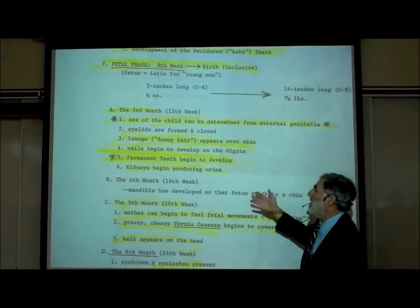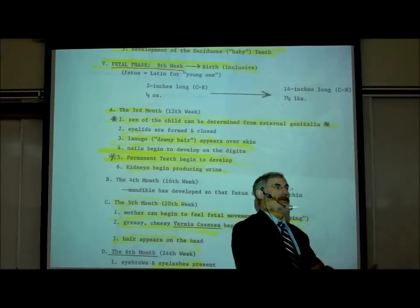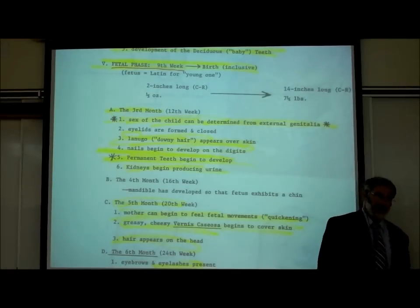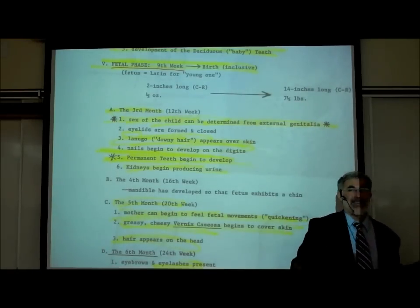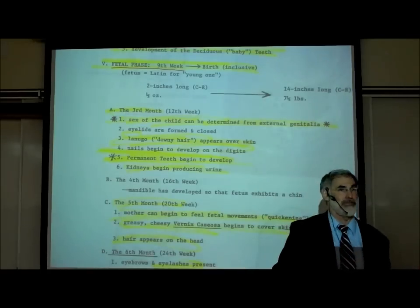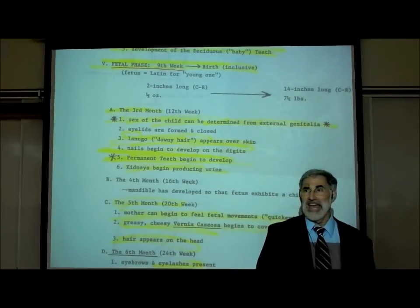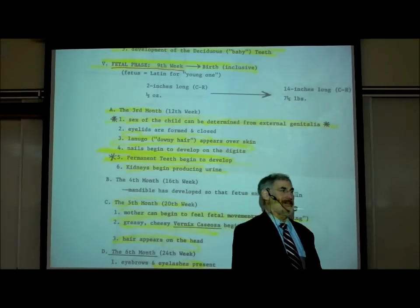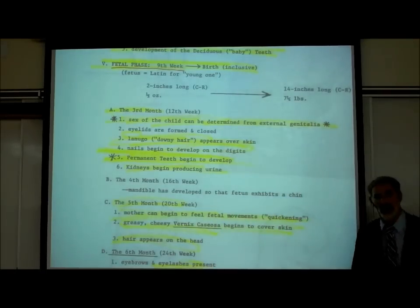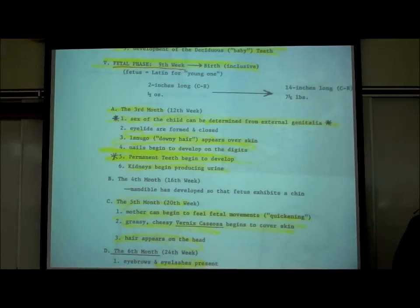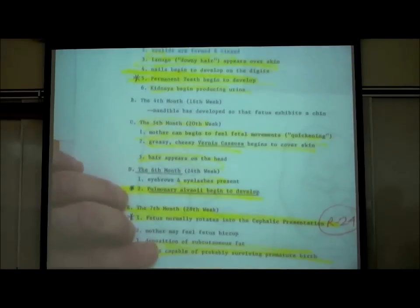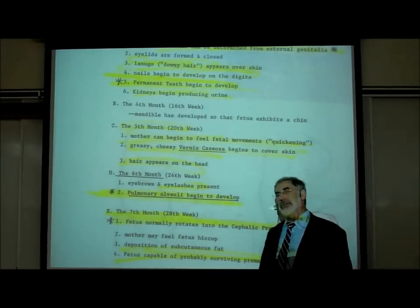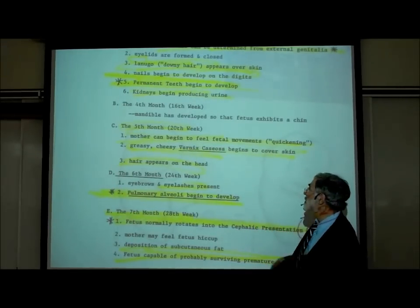The kidneys are already working and the baby urinates right into the amniotic sac. The urine is very dilute — the baby is getting its nourishment across the placenta from the mother in the form of sugars and amino acids, so there's very little waste in the urine. By the fourth month, the mandible is formed.